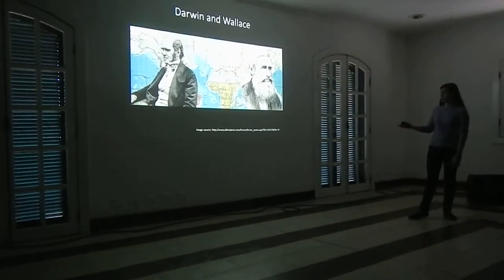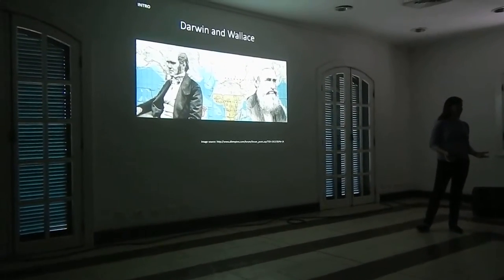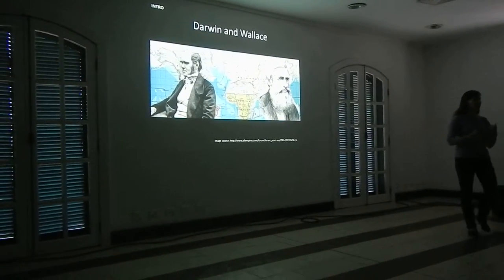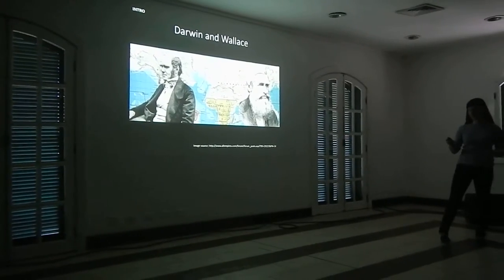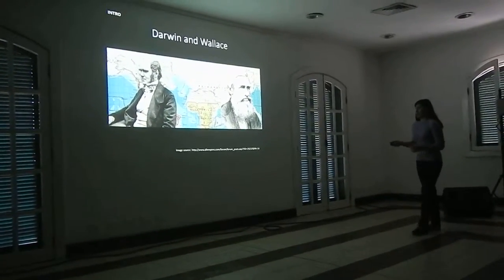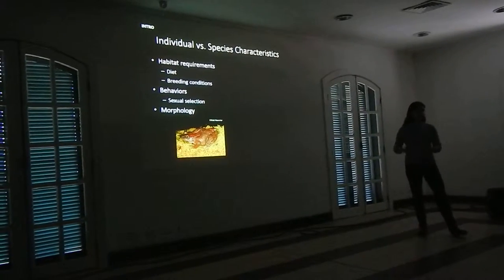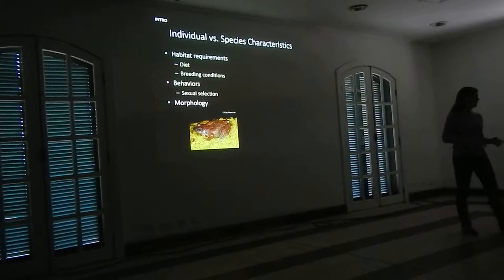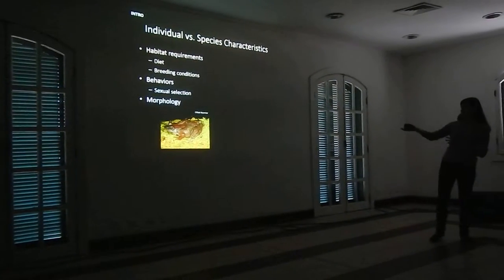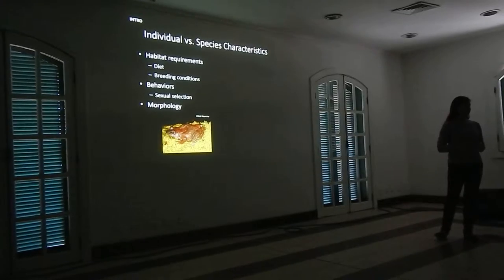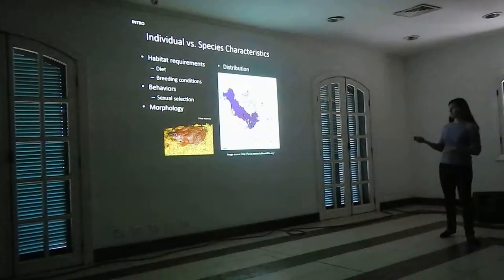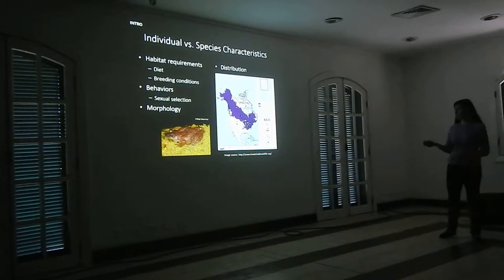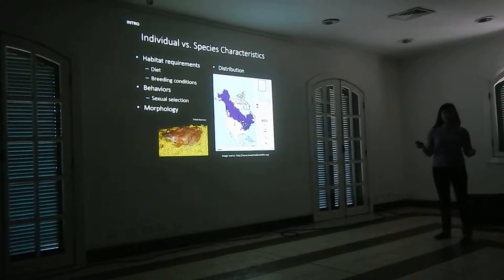As you probably know, Darwin and Wallace were fascinated by understanding how the distributions of species came about, and they encoded different mechanisms to explain those distributions. Although there are a number of individual-level characteristics — like habitat requirements, behaviors, and pathology — there's only one characteristic the whole species has, and that's its distribution. A single individual doesn't have the distribution of the whole species, but the distribution is likely a composite of all these different individual-level factors.